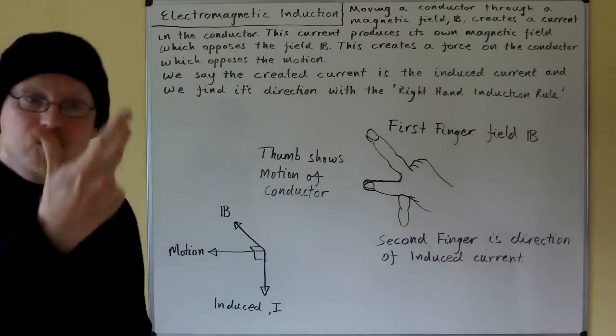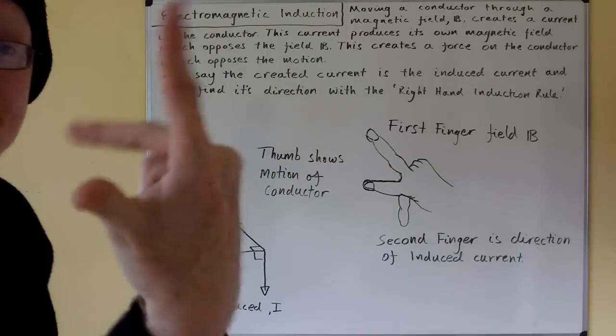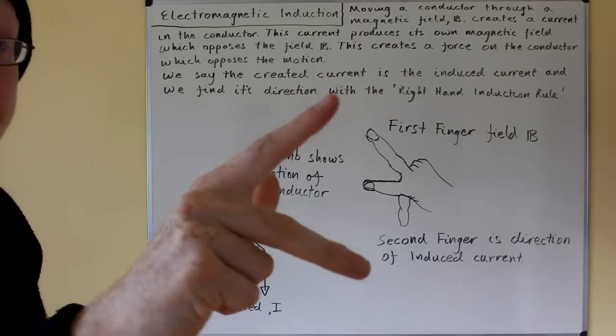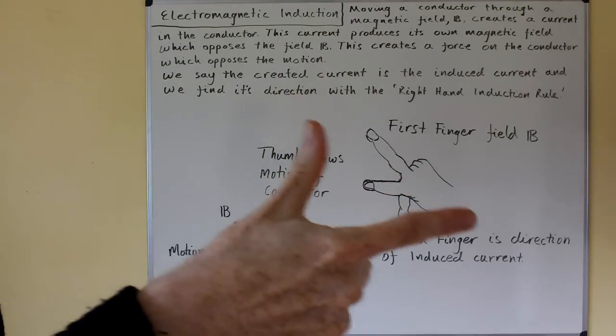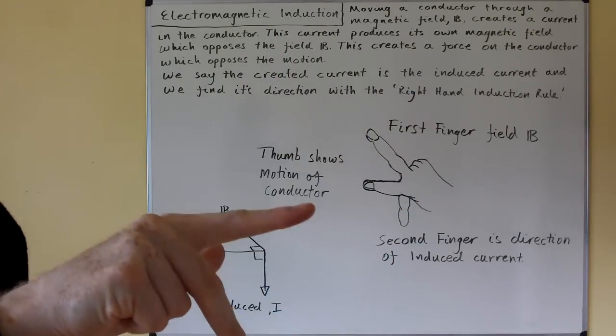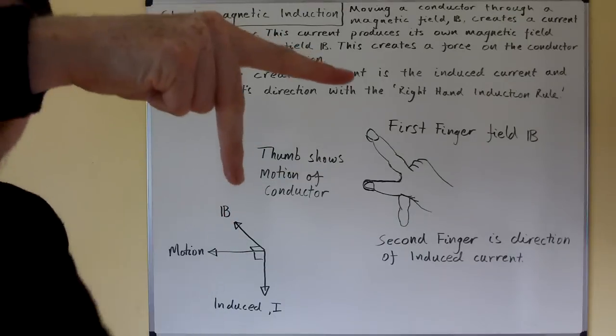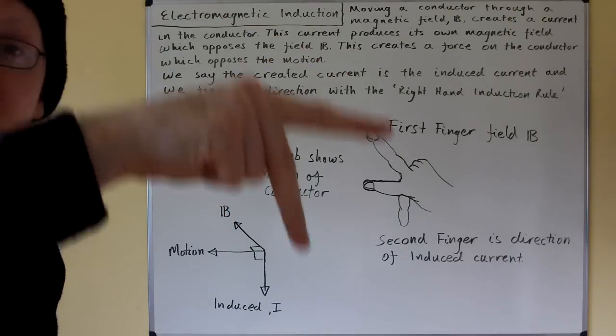Now what you do is you take your three fingers of your right hand and you make three right angles with them. The thumb represents the motion of the conductor. The first finger represents the direction of the field and the second finger represents the direction of the induced current.